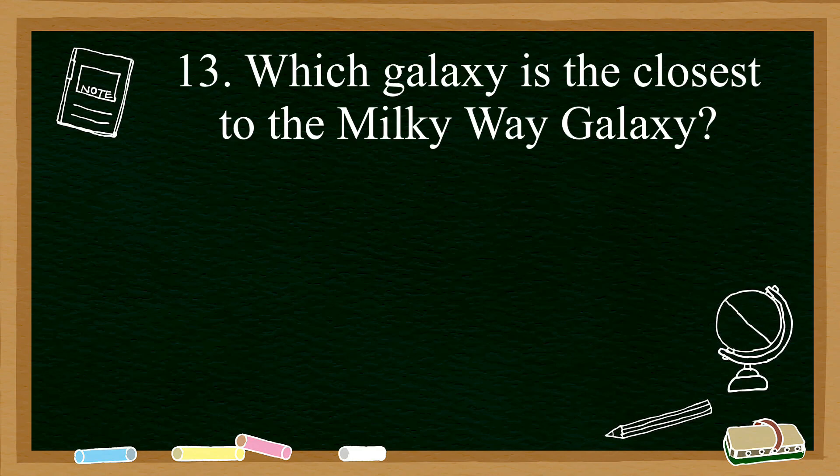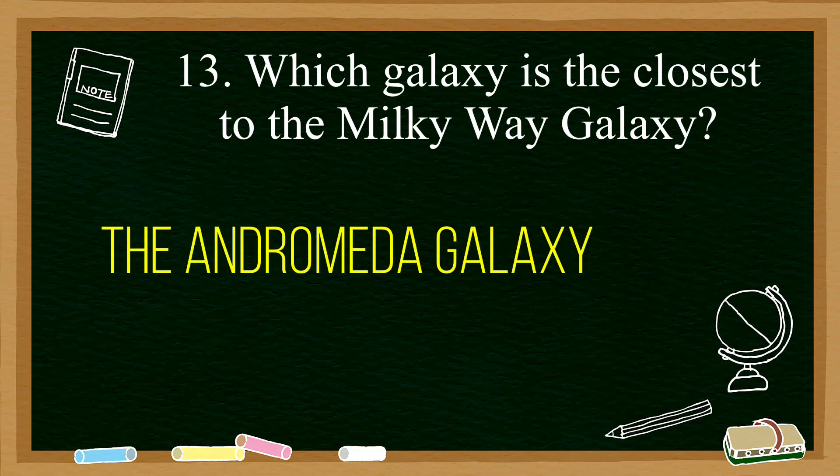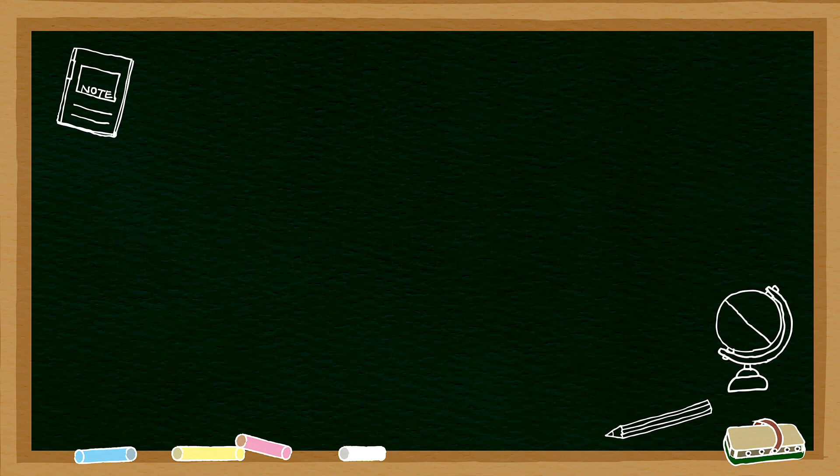Number thirteen: which galaxy is the closest to the Milky Way galaxy? At a distance of 2.537 million light years, the Andromeda galaxy is the closest to the Milky Way galaxy.